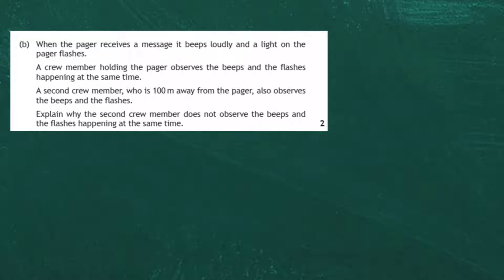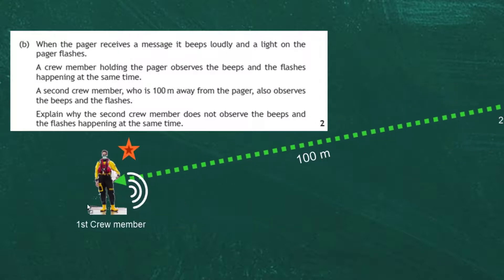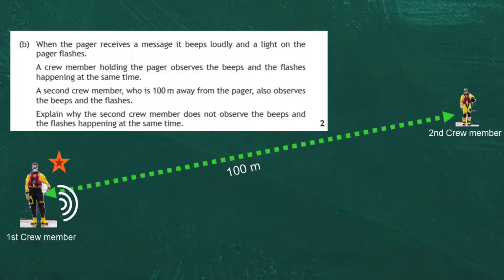Question 9b: When a pager receives a message it beeps loudly and a light flashes. A crew member holding the pager observes the beeps and flashes happening at the same time. But a second crew member who is 100 metres away also observes the beeps and flashes. Explain why the second crew member does not observe the beeps and flashes happening at the same time. The first crew member sees the flash and hears the beep instantaneously because it's happening right beside him.